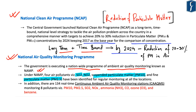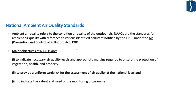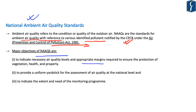In addition, there are 134 real-time continuous ambient air quality monitoring stations which monitor eight pollutants: PM10, PM2.5, sulfur dioxide, nitrous oxides, ammonia, carbon monoxide, ozone, and benzene. Regarding National Ambient Air Quality Standards (NAAQS), these are standards for ambient air quality notified by the Central Pollution Control Board under the Air Prevention and Control of Pollution Act 1981. Their major objectives are to indicate necessary air quality levels, provide a uniform yardstick for national assessment, and indicate the extent and need of the monitoring program.